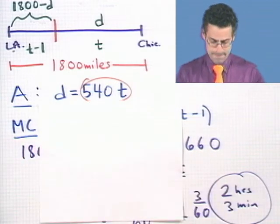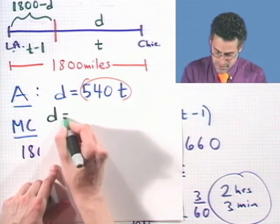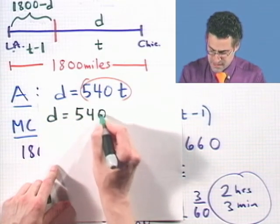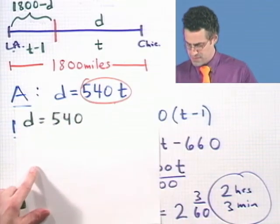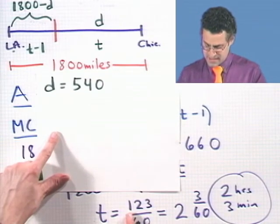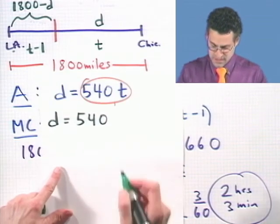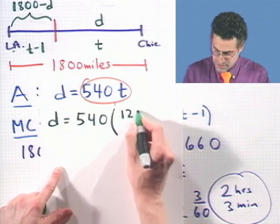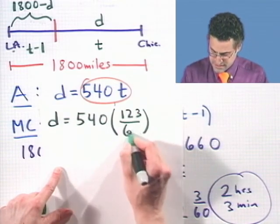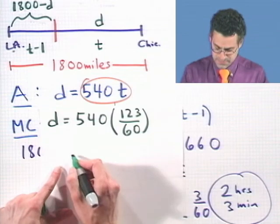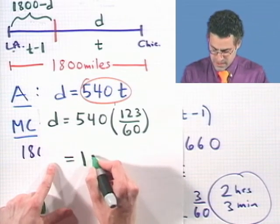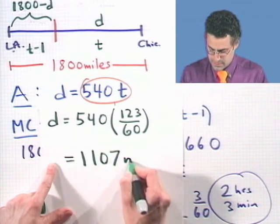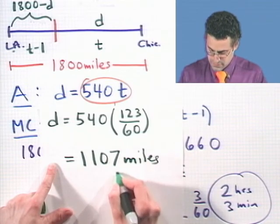We know that d equals 540 times T. And at that moment where they meet, we know that's going to happen at T equals 123 over 60. So I insert 123 divided by 60. And when I simplify that, that comes out to be 1,107 miles from Chicago.